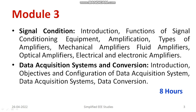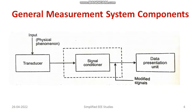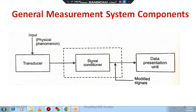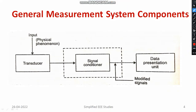First and foremost, we are going to discuss what is meant by a signal conditioning device and its importance. I would like to show you one block diagram which depicts the importance of the signal conditioning unit. First of all, you need to know about transducers. A transducer is a device which is used to convert a non-electrical quantity into an electrical quantity. We have different inputs such as force, pressure, temperature, etc. — all mechanical parameters that are converted into electrical parameters using the transducer.